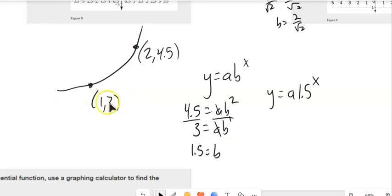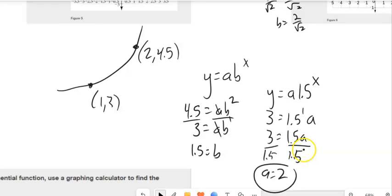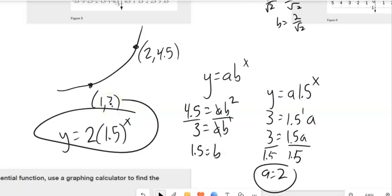Notice I can plug the points in and figure out one of the equations. So now I know that y equals a times 1.5 to the x. And now if I want to find a, I could plug in one of these points again. When x is 1, y is 3. So 3 equals 1.5 to the first power times a. 1.5 to the first power is 1.5. Divide both sides by 1.5, I get a equals 2. So my equation would be y equals 2 times 1.5 to the x. I just did what's called curve fitting.